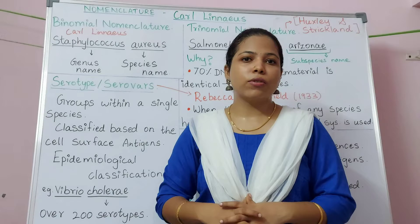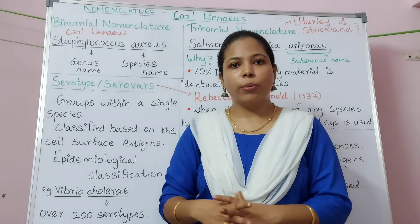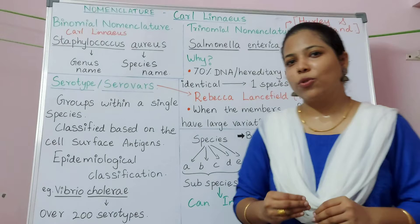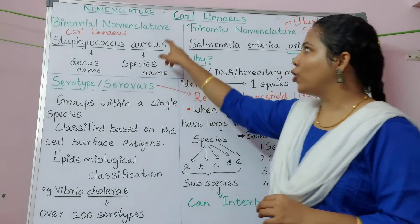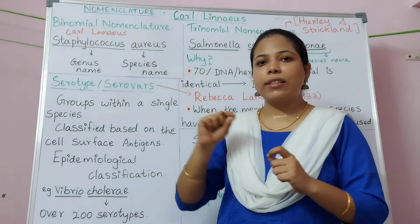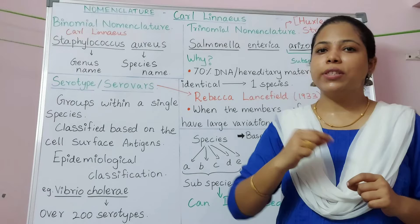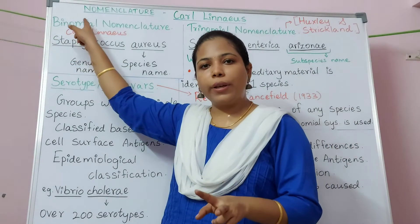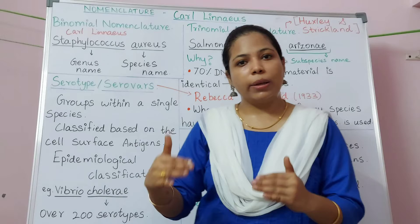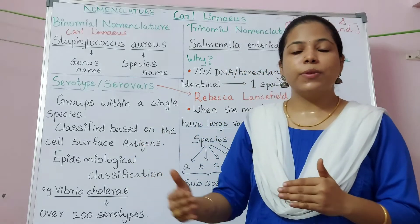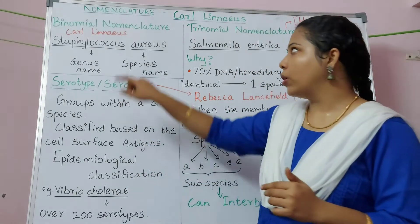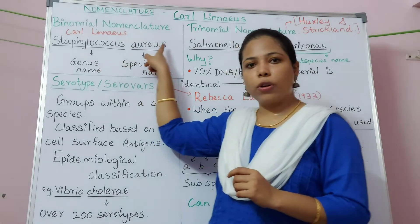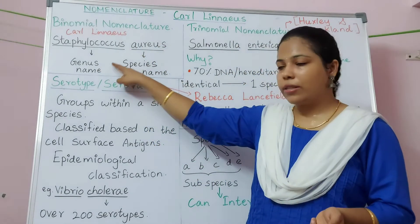Good morning everyone. Today's topic is trinomial nomenclature. In order to understand trinomial nomenclature, we need to know what is binomial nomenclature. Nomenclature is the system of naming organisms with scientific terms. 'Bi' refers to two, 'nominal' means name — so the system of naming organisms with two scientific terms is called binomial nomenclature. An example is Staphylococcus aureus; Staphylococcus is the genus name.